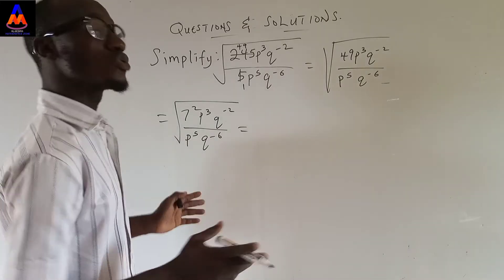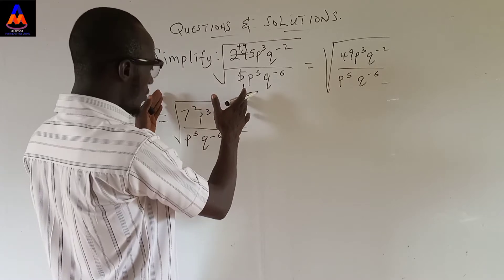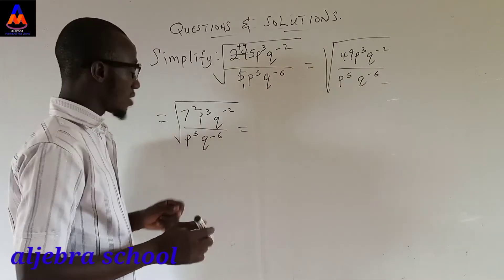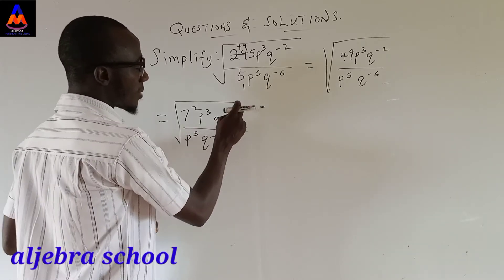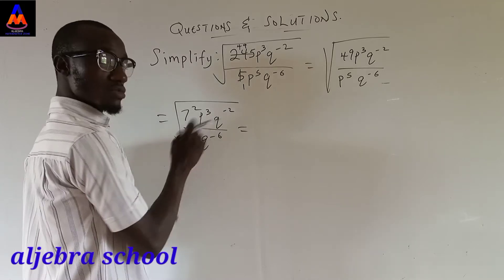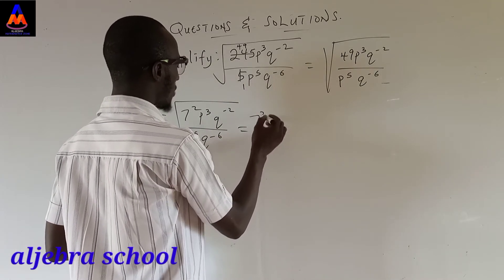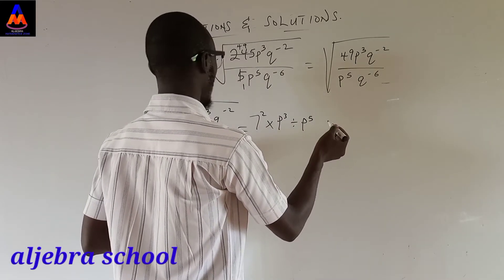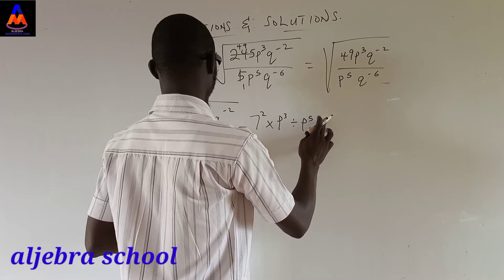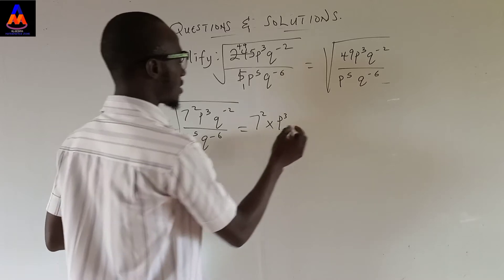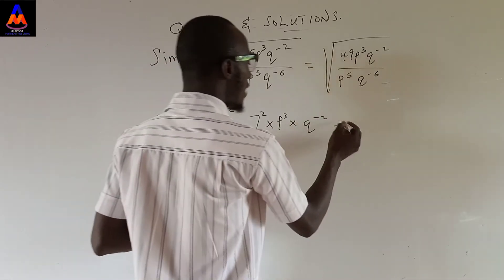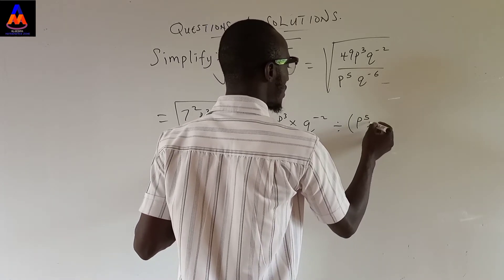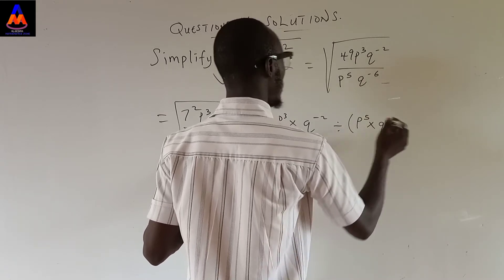Everything is under the square root. What we try to do now is apply the square root on each of the numbers. Before doing that, we are not done with the numbers inside. We have p raised to the power 3, p raised to the power 5, q raised to the power minus 2, and q raised to the power minus 6. So we compute: 7 squared times p to the power 3 divided by p to the power 5, times q to the power minus 2, all divided by the denominator — p raised to the power 5 times q raised to the power minus 6.